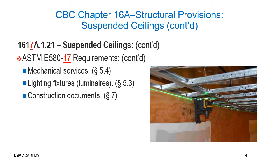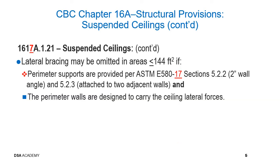For mechanical surfaces — Section 5.4; for lighting fixtures — Section 5.3; for construction documents — Section 7. Lateral bracing may be omitted in areas less than or equal to 144 square feet, if perimeter supports are provided per ASTM E580 Section 5.2.2 (2-inch wall angles) and Section 5.2.3 (attached to two adjacent walls), and the perimeter walls are designed to carry the ceiling lateral forces.